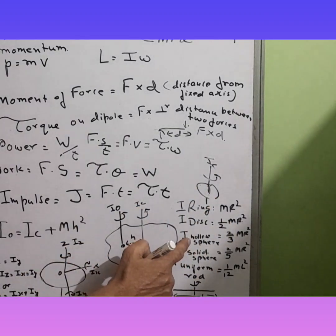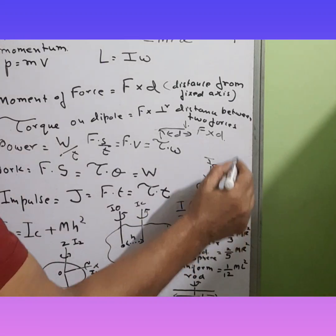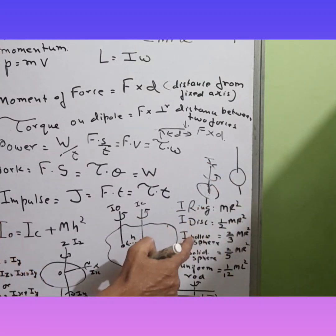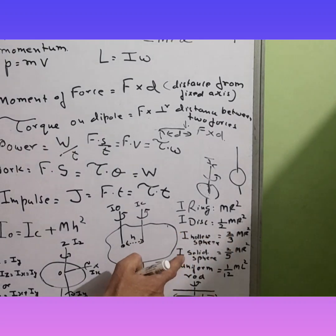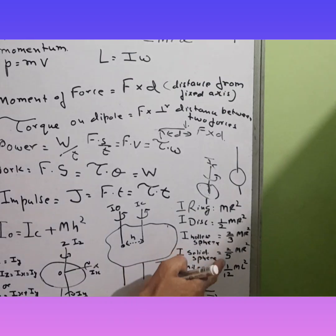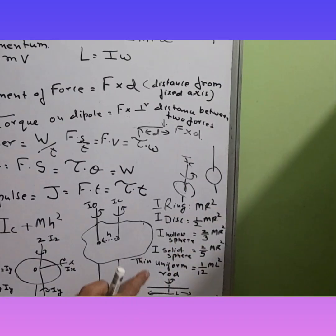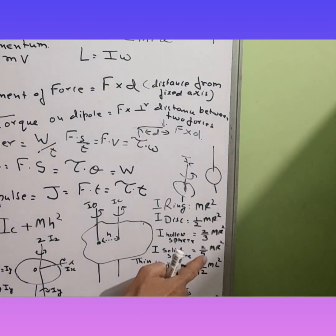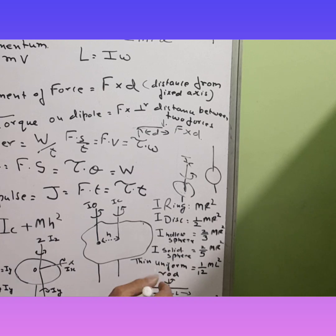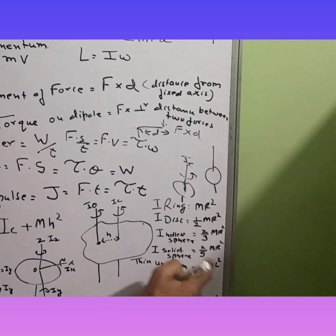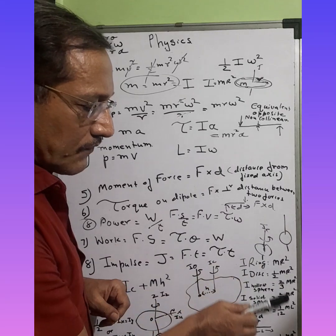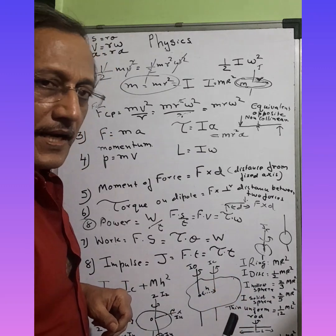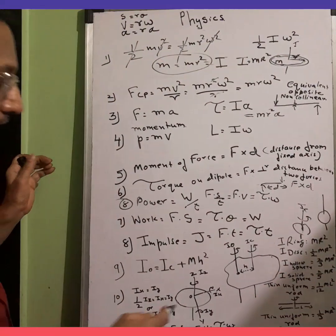If it is a hollow sphere, then Ic is (2/3)MR squared. If it is a solid sphere — a filled sphere — then Ic is (2/5)MR squared. If it is a thin uniform rod, Ic is (1/12)ML squared, where L is the length of the rod. Please memorize all these formulae.